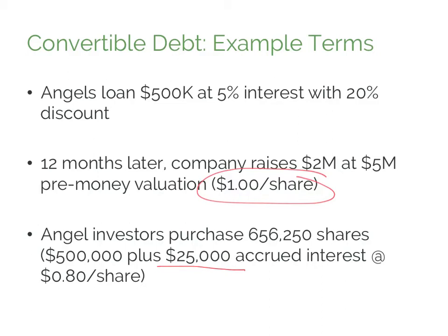The new investors are paying $1 per share, but the angel investors get a 20% discount on that price, so they convert at $0.80 per share. Their $525,000 therefore purchases 656,250 shares of the Series A preferred.